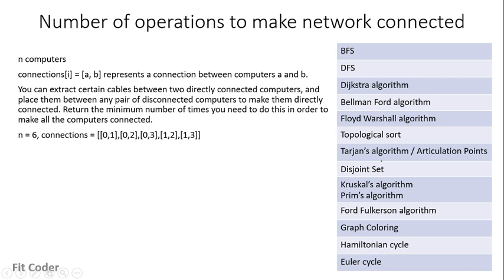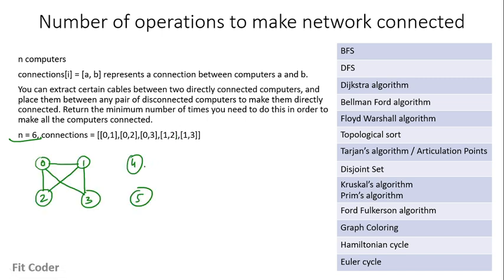The next question is number of operations to make the network connected. We are given n computers and connections indicating a cable between computers A and B. The whole network is currently disconnected and we want to find out how we can extract cables from connected parts to make the entire graph connected. We have six computers and their connections, and as we can see the graph is disconnected because computers 4 and 5 are not connected with any of the other vertices.